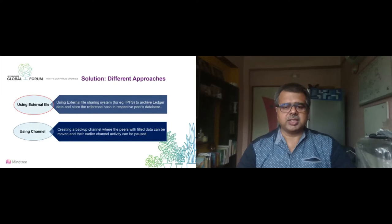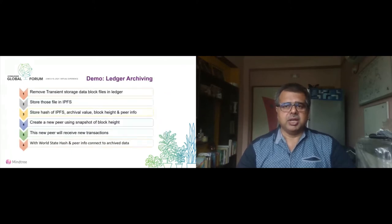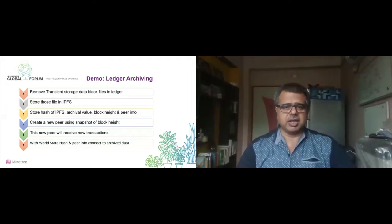For this demo, we will be demonstrating the external file approach — using an external file for ledger archiving. We have used the IPFS tool for storage, though any tool can be used instead of IPFS. First, we set up the organizations, then the chain code installation will invoke transactions to increase block height. At a certain block height the peer will be filled, and the script will take a backup once it gets filled.